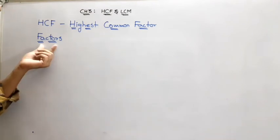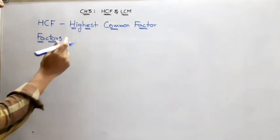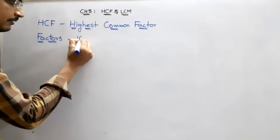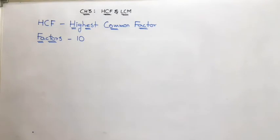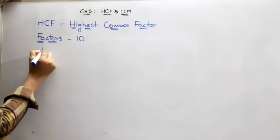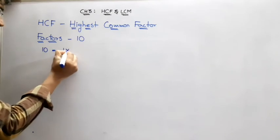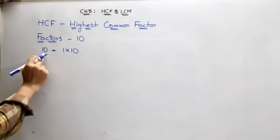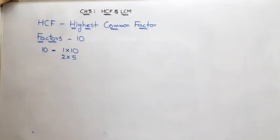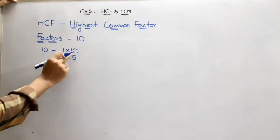I want to explain using an example. For example, if I ask you to find the factors of 10 — we always start in ascending order: 1 into 10, which gives us 10; and 2 into 5, which gives us 10. So the factors of 10 include the pairs 1×10 and 2×5.